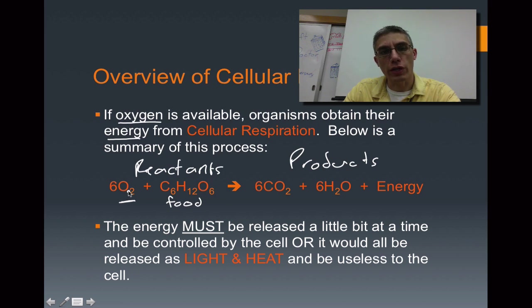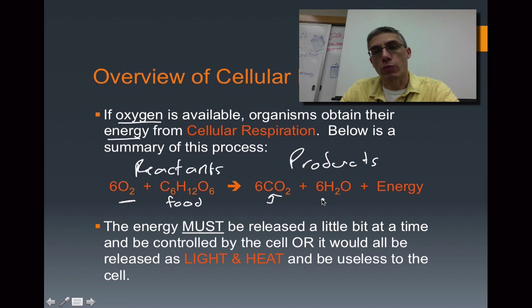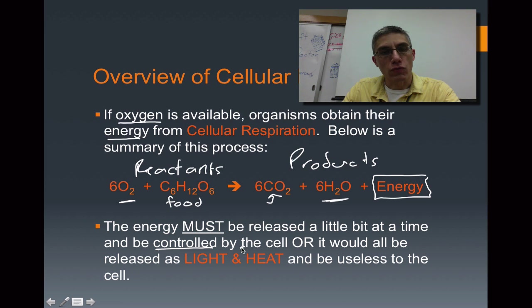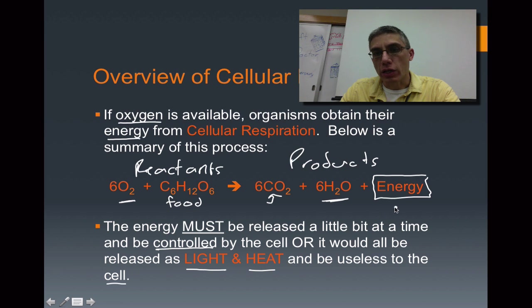Combining the O2 with our food molecule during cell respiration produces a waste product — the carbon dioxide we breathe out — as well as water. The product we're most interested in is the energy extracted from that food molecule. This energy must be released a little bit at a time and be controlled by the cell. If you released all of this energy at once from those food molecules, it would be released primarily as light and heat energy, which cannot be used by the cell. The energy we need is a chemical form of energy.